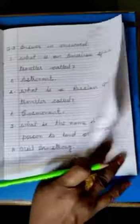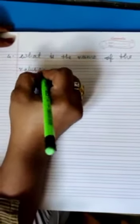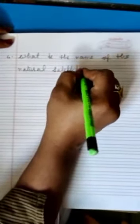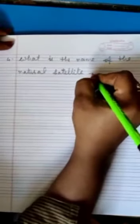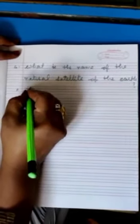Turn your page. Four. What is the name of the natural satellite of the Earth? Answer: The Moon.